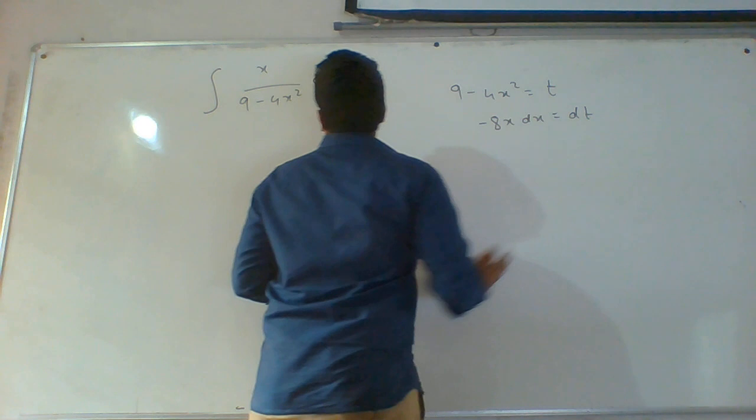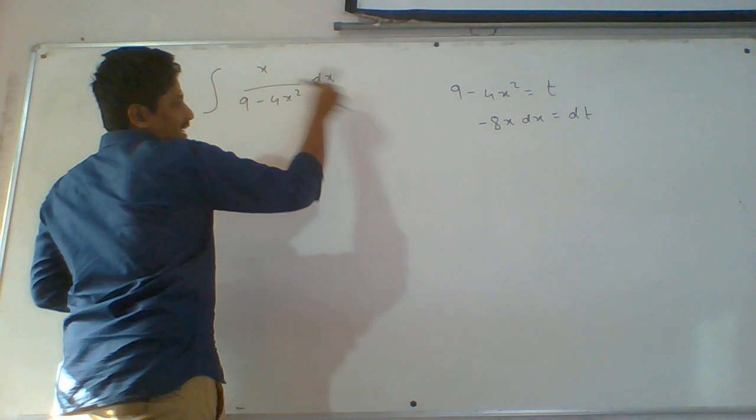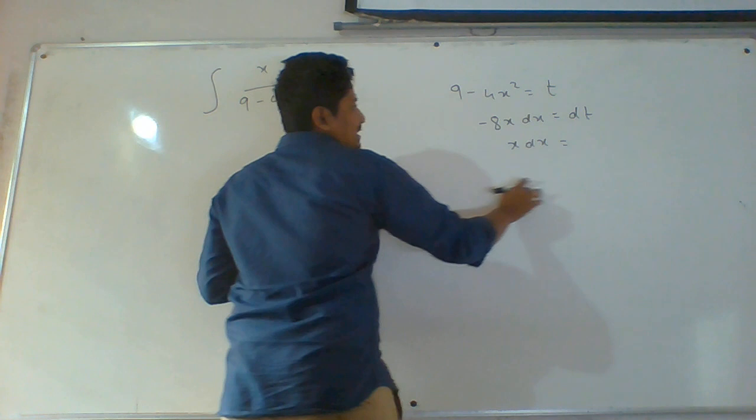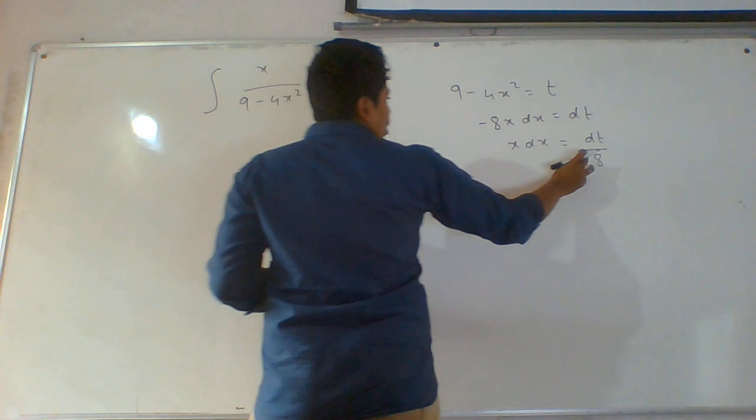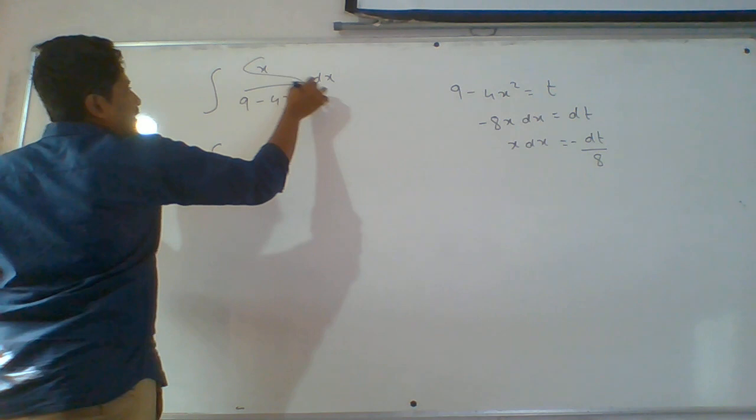Now there is only a change in constants, which we can adjust. We require only x dx. Sending that to the other side gives dt by minus 8. So in the place of x dx, we can substitute minus dt by 8.